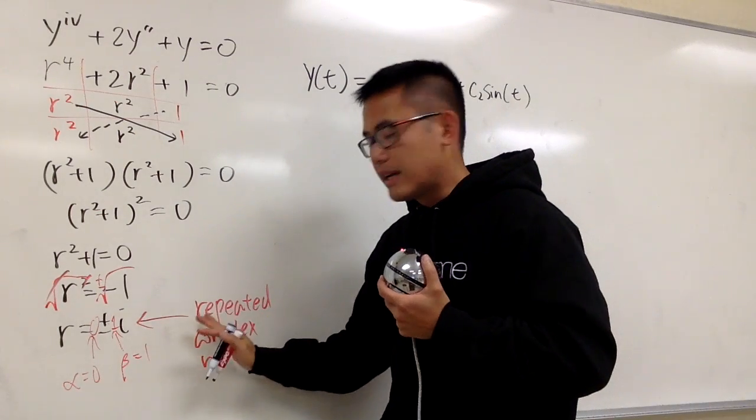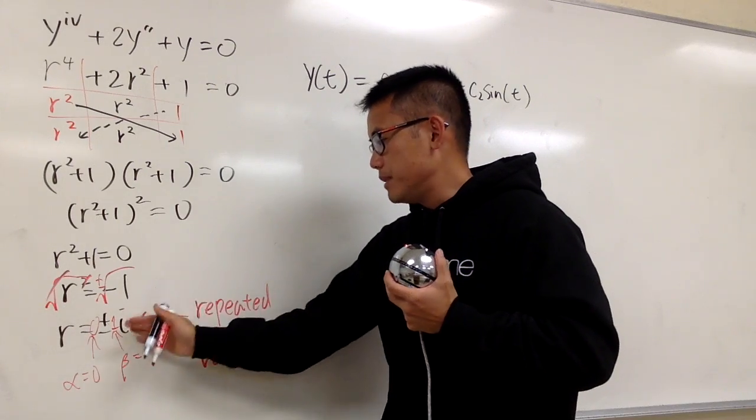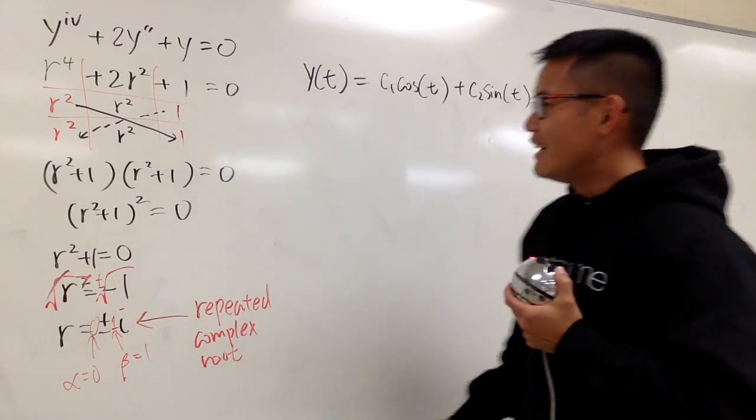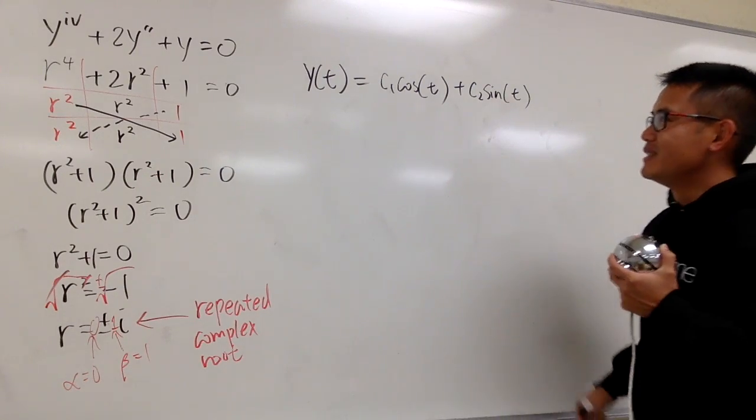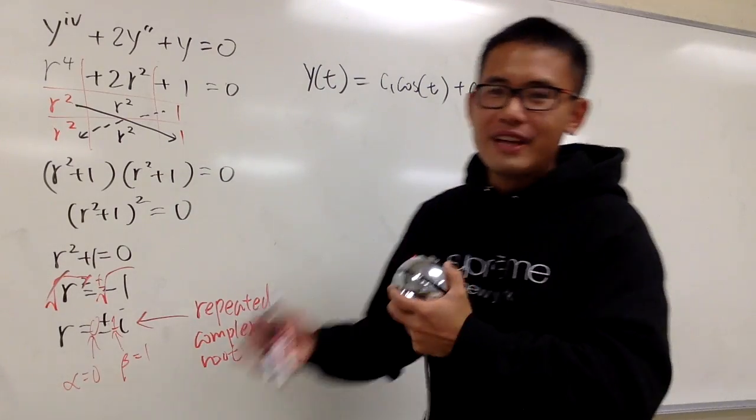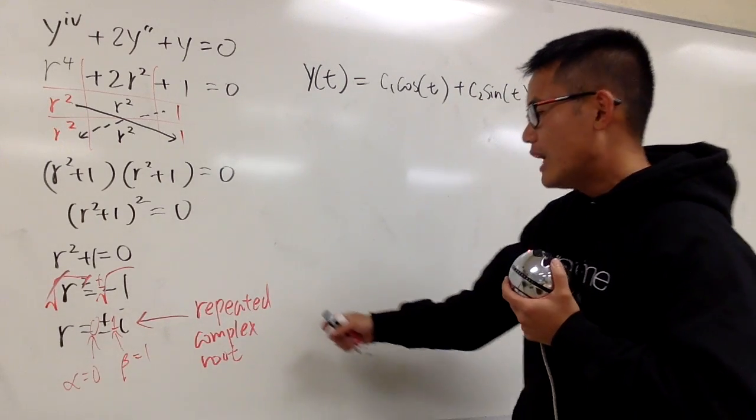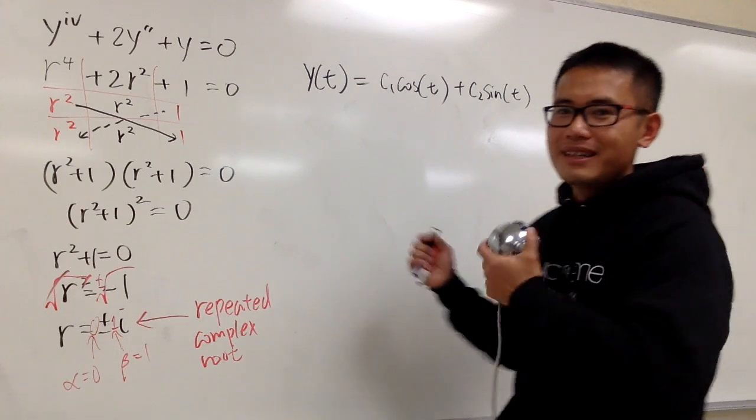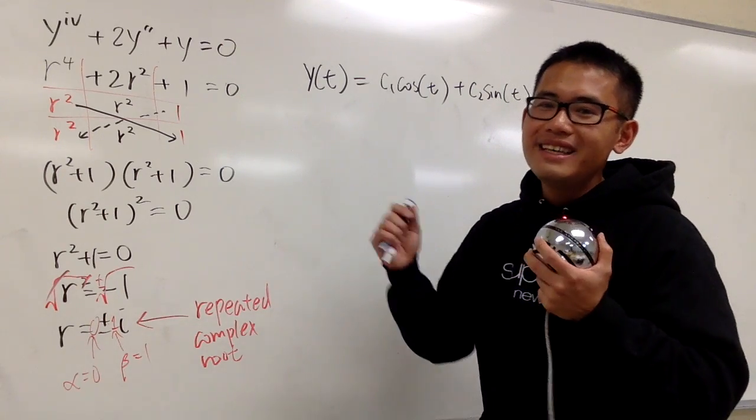This is it if you ignore the fact that this r was being repeated. But the fact is that it's repeated. And you see, we only have two c's at the moment. Well, just like the deals that we have done in the past, whenever we have a repeated root, we pretty much have the same thing, and we multiply by a t to make them linearly independent.